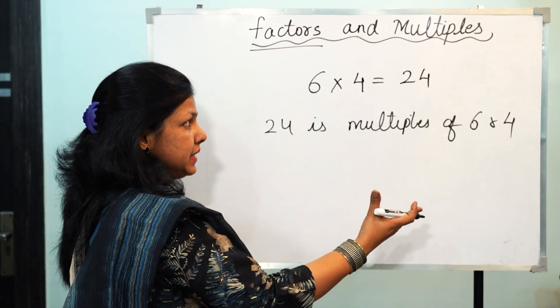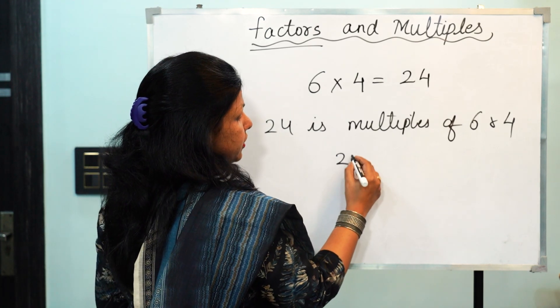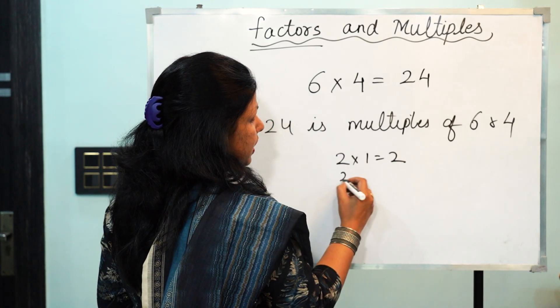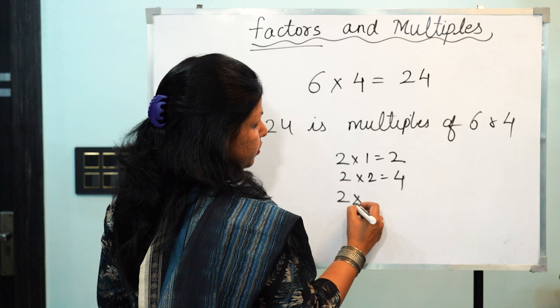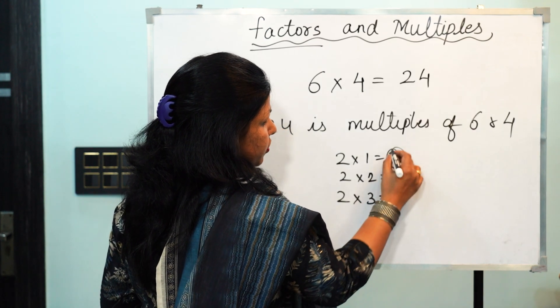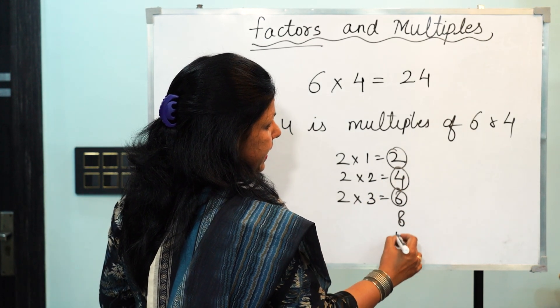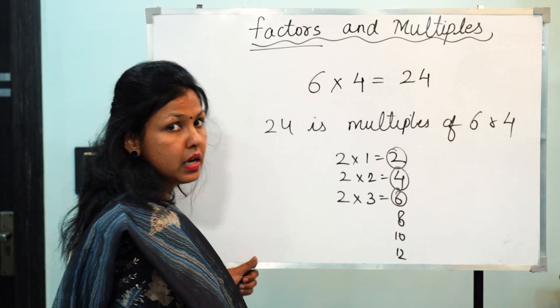So these are basically the tables. If I say what are the multiples of 2, I can start counting the table of 2 and find out the multiples of 2: 2, 4, 6, 8, 10, 12 and so on.